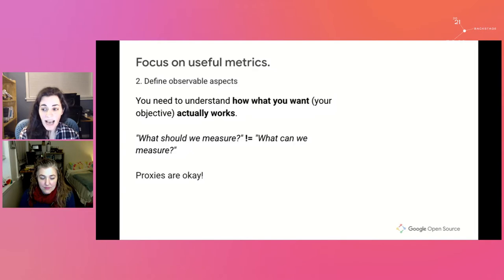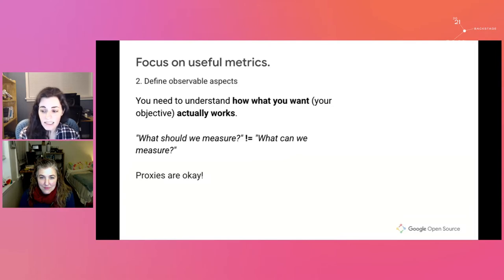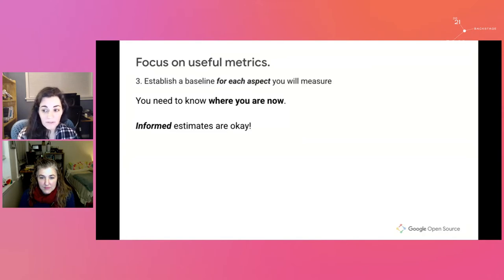Next, it's time to define aspects of each objective that can be observed — you need to understand how what you want actually works. Another way to think about an aspect is as a trait. Choosing aspects of your metrics is the most important step; remember that what you should measure is not the same as asking what you can measure. It allows you to reach beyond easily obtainable data into information that truly tells the picture of your objective. Sometimes what you're interested in doesn't match the data you can actually collect — in these cases, we can use proxy variables, which can circumscribe what you're actually trying to measure.